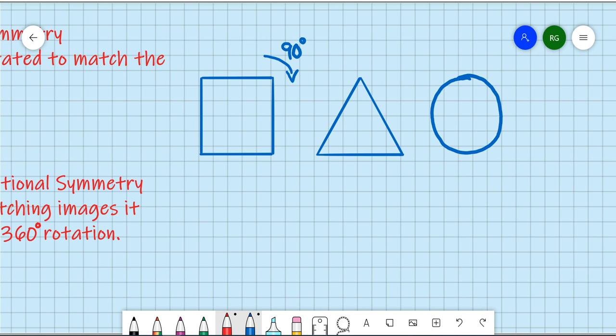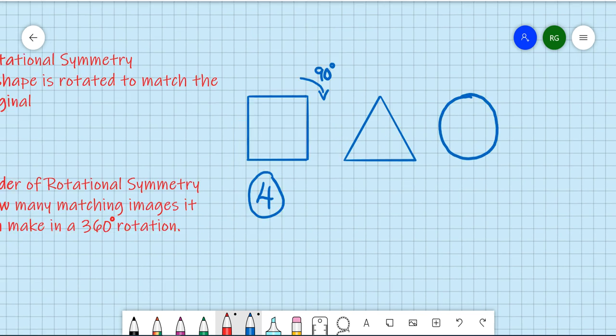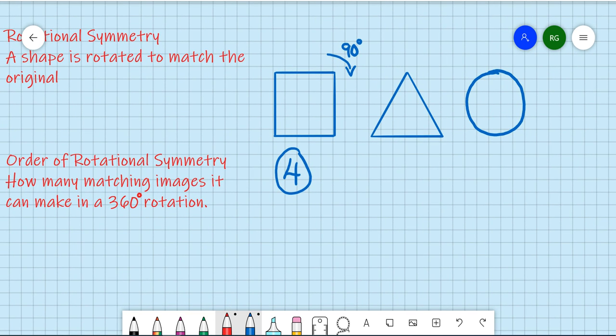What we find is that it has an order of rotational symmetry of four. In other words, you can get four matching images of a square in one full rotation.